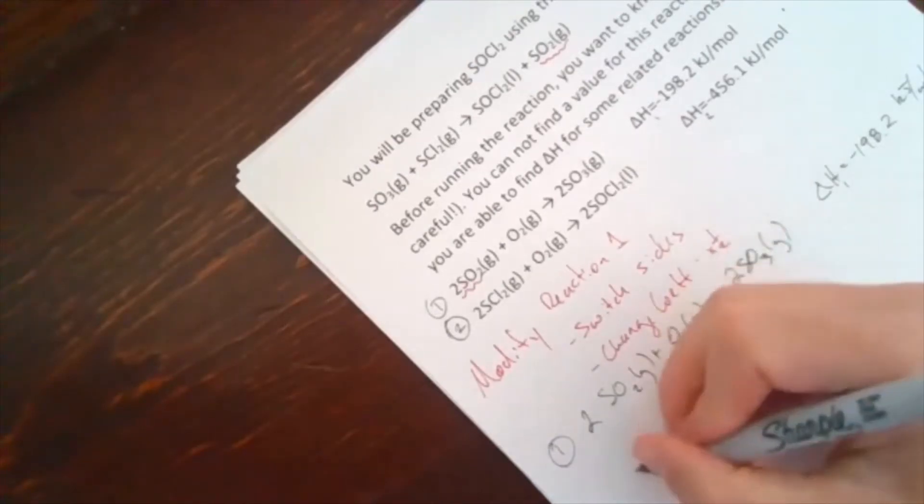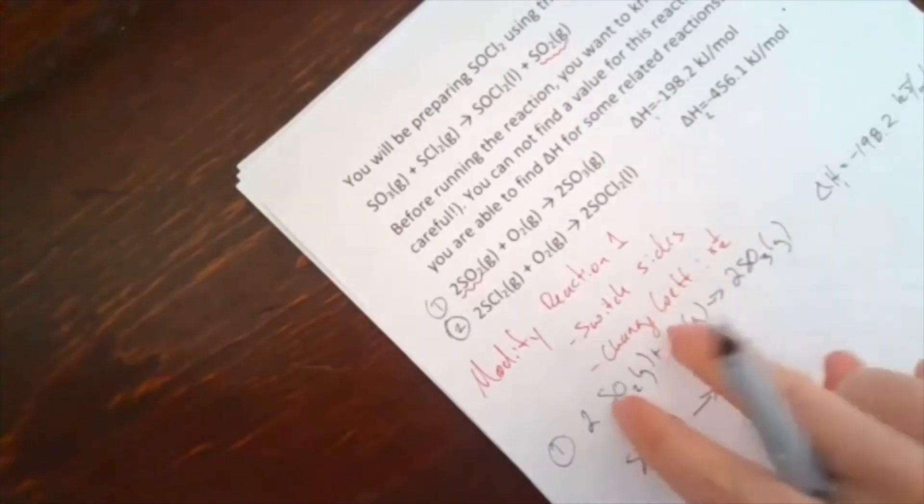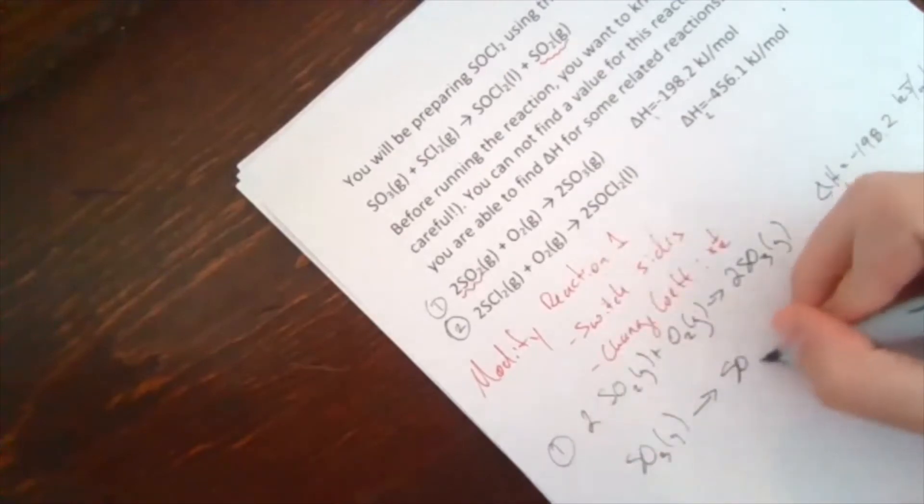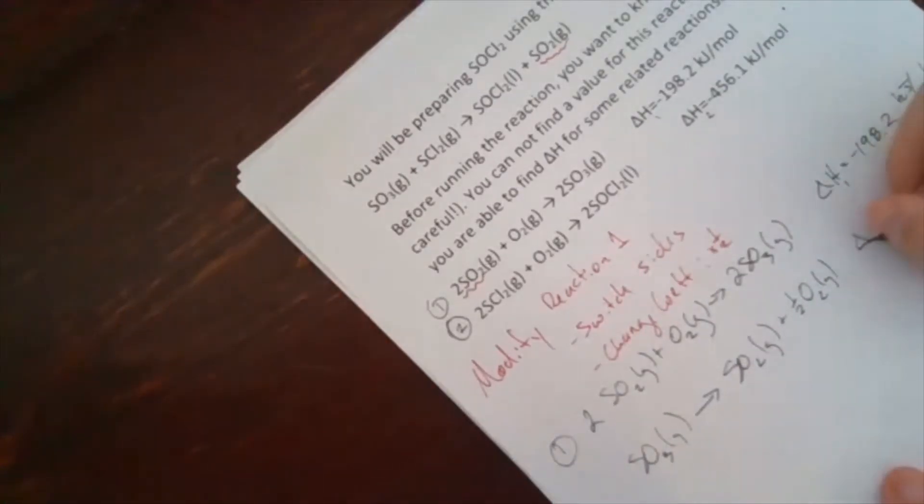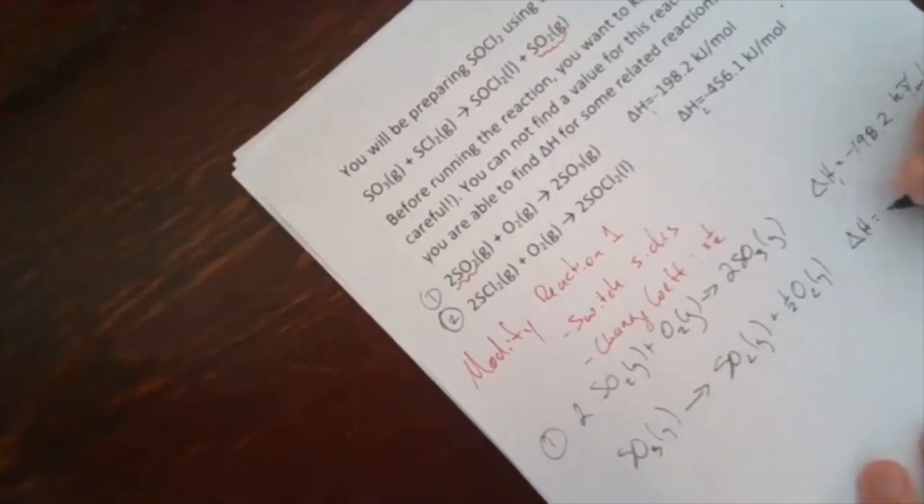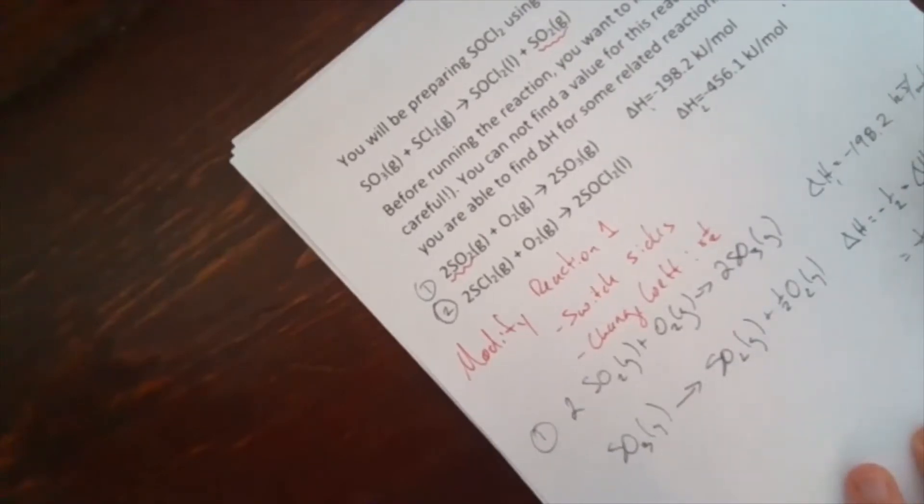But I want to switch sides and I want to multiply the coefficients by one half. So this, instead of 2SO3 as a product, becomes just SO3 gas as a reactant. My products now become, instead of 2SO2, just becomes SO2 gas plus one half O2 gas. And the delta H on this is going to be equal to negative one half times that delta H1 that I had before. So negative one half times negative 198.2 kilojoules per mole is positive 99.1 kilojoules per mole.